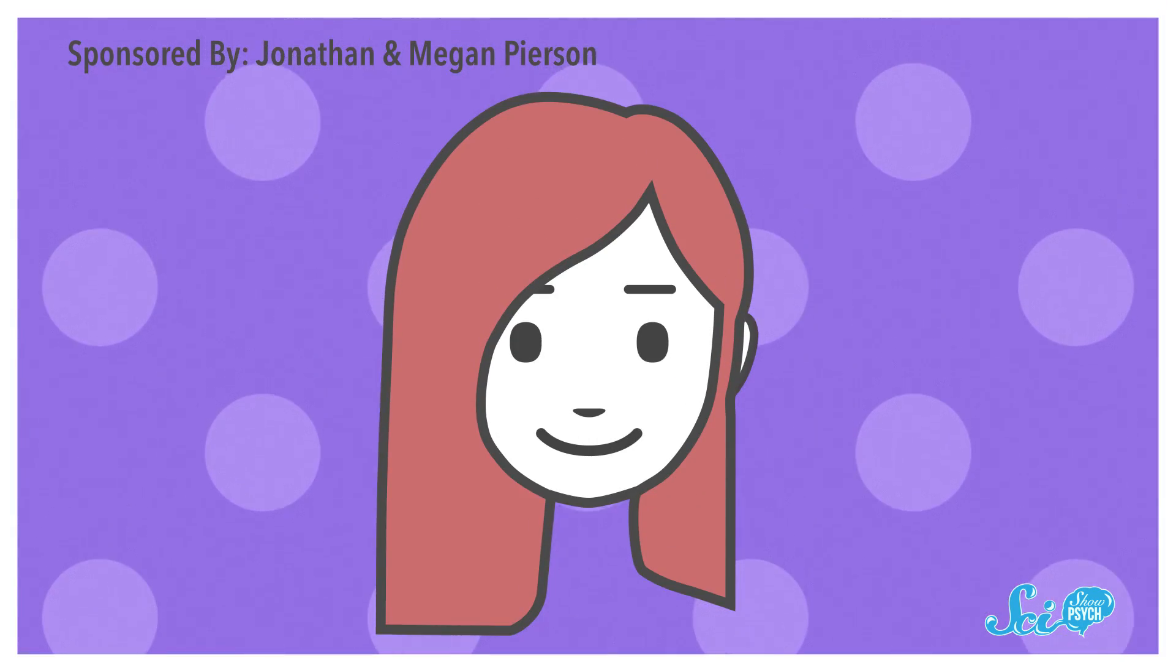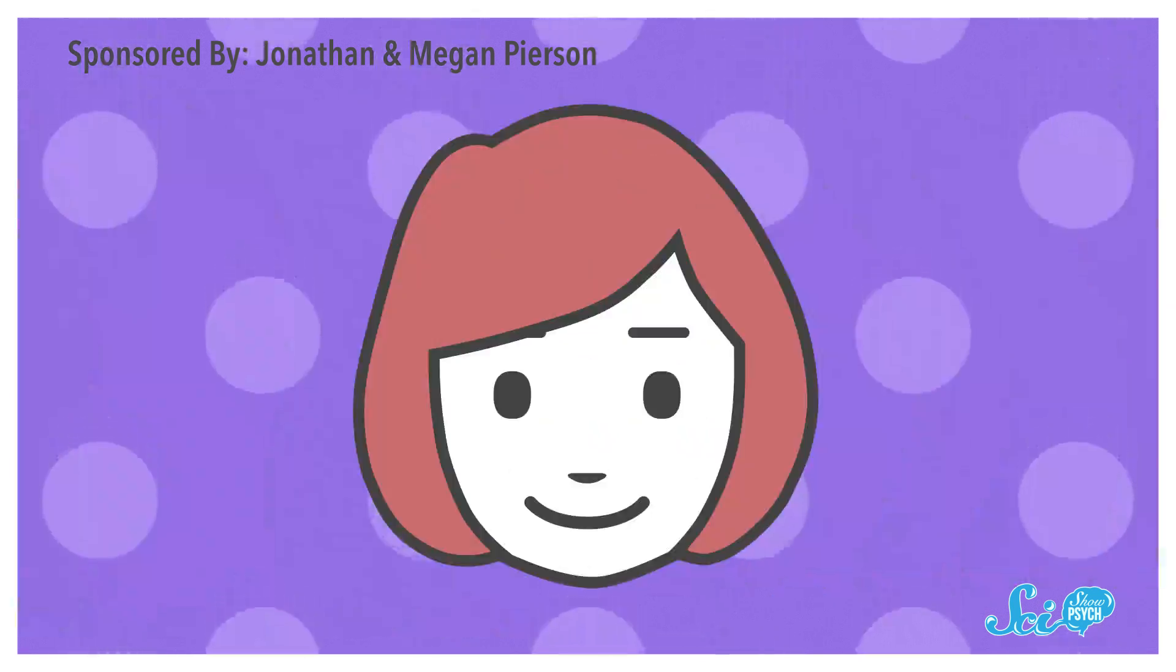Fortunately, most people with prosopagnosia can still recognize their friends and family, they just have to work harder at it. For instance, they often actively memorize distinct features about friends, like that Bonnie has long pink hair, so if Bonnie gets a haircut, they'll have trouble recognizing her.